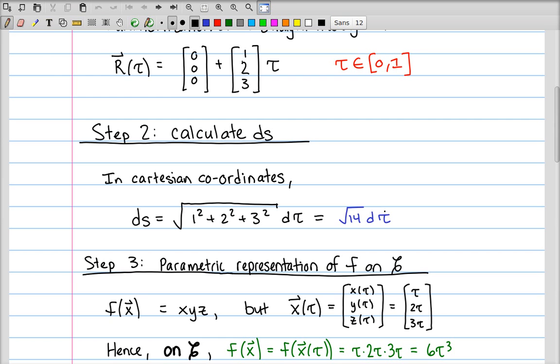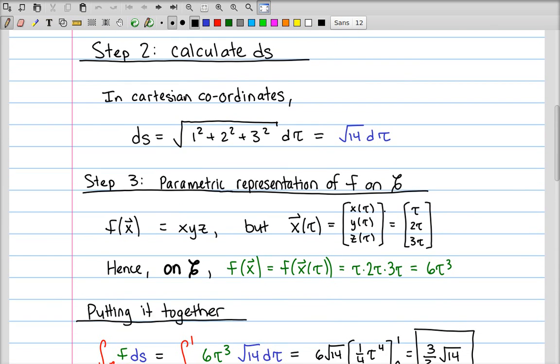So we've now calculated ds. The last piece is to construct a parametric representation of the integrand f on the curve c. And this is maybe the most conceptually involved part, but it's really not that bad. So we have the function f of x, which is xyz, but the points on the curve are given by the vector function tau, 2 tau, 3 tau.